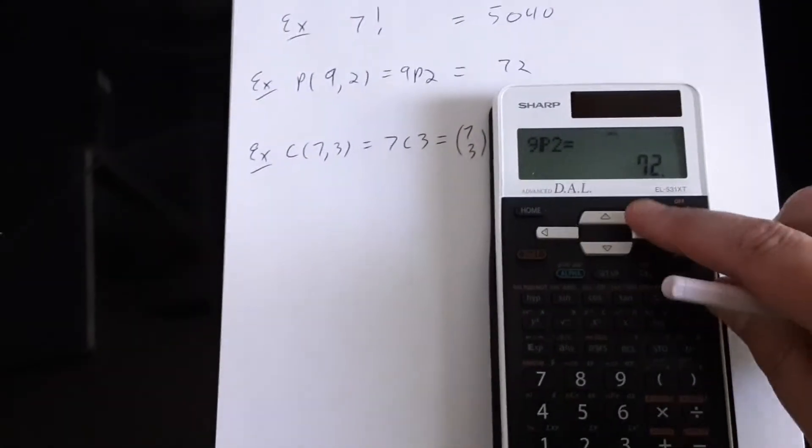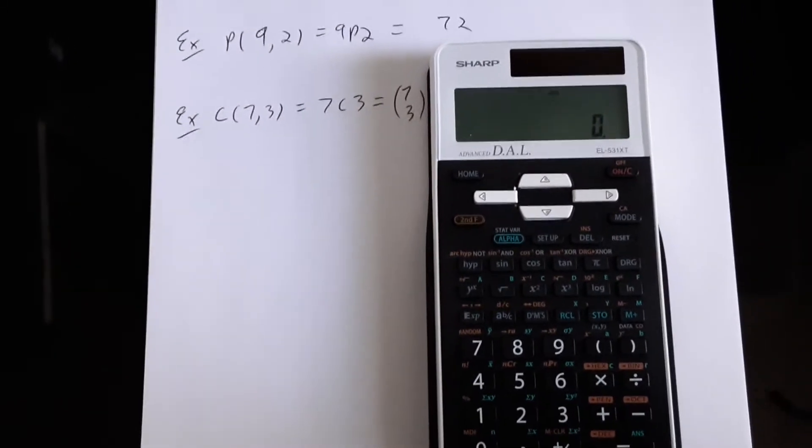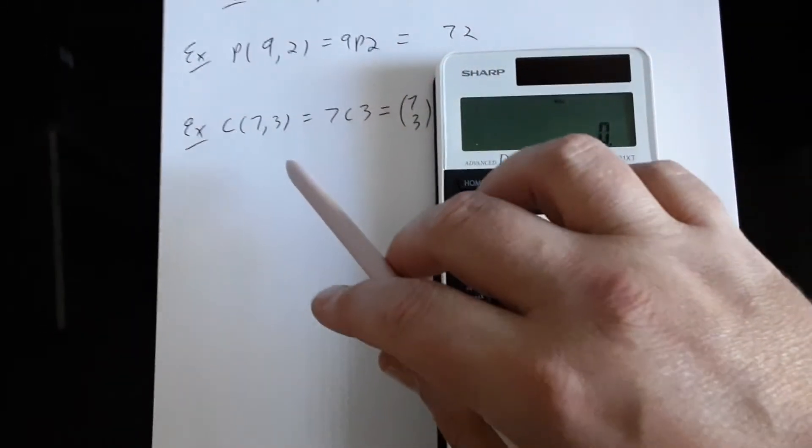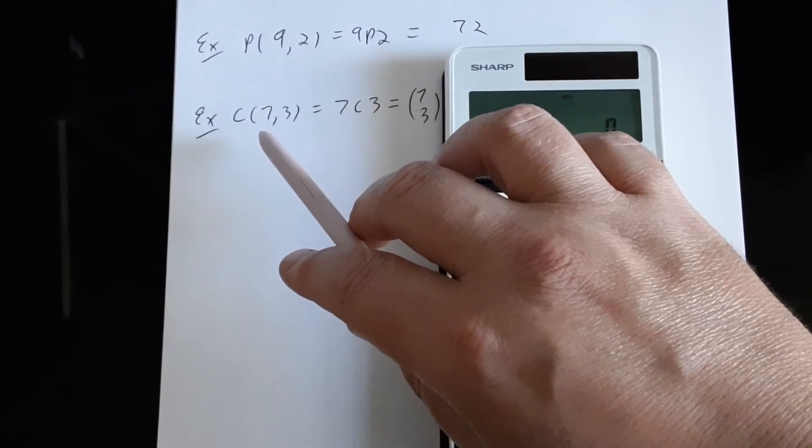And then finally combinations. This is us making just a selection, not doing any arranging. We're looking for here C73, the number of ways for us to select three things out of a group of seven distinct objects.